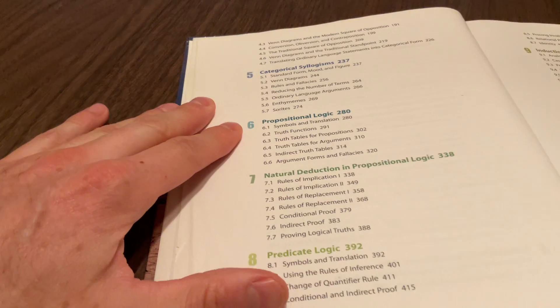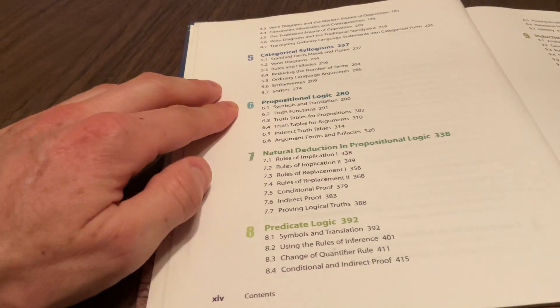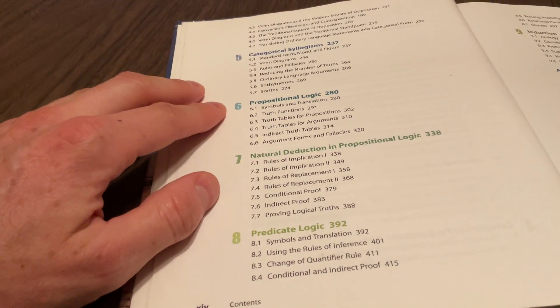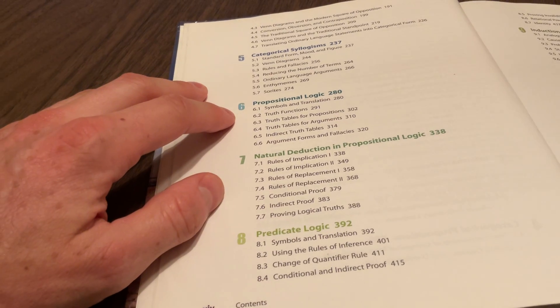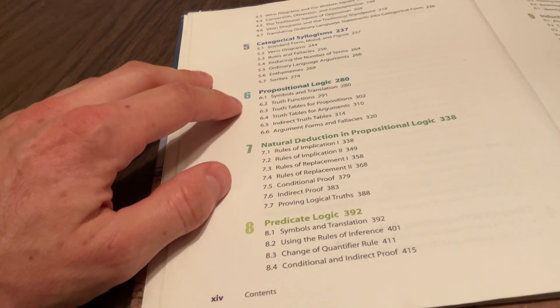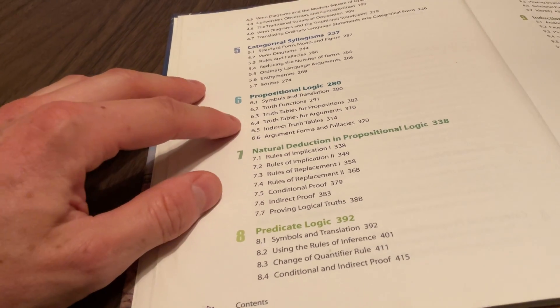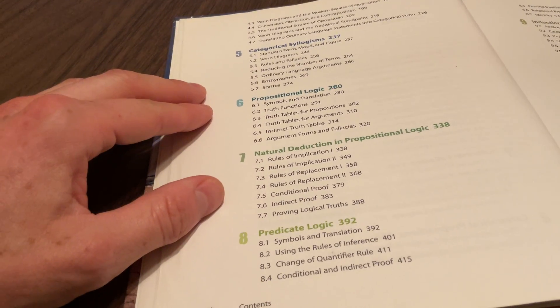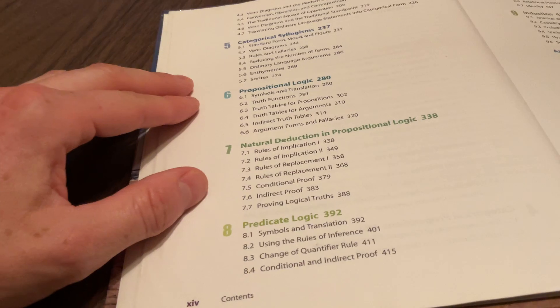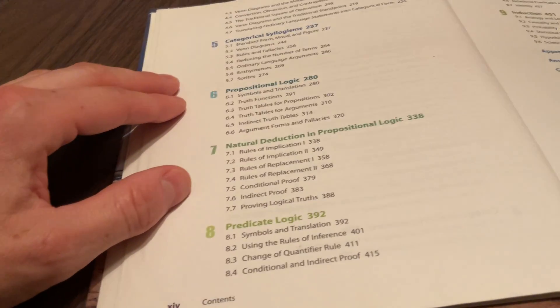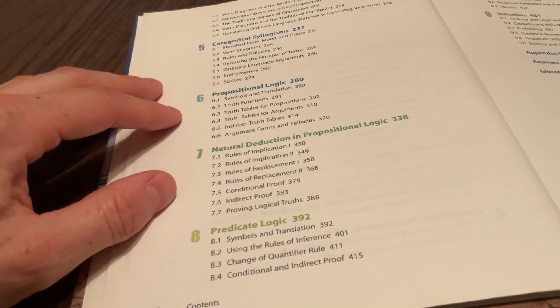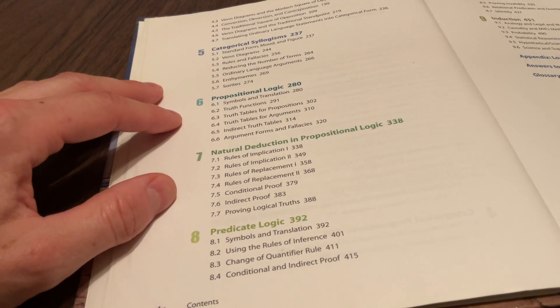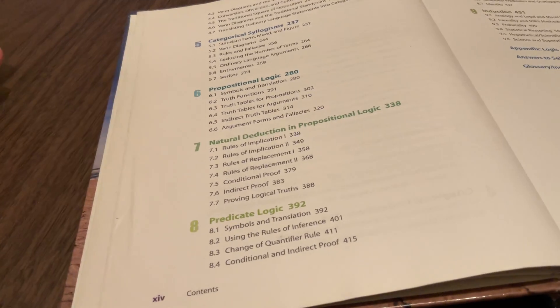Then you move into symbolic logic, like propositional logic. That's a truth-functional logic. You have truth tables, that sort of thing. I kind of have a dislike of truth tables, but perhaps they're pedagogically useful. They're kind of tedious, but that's a standard topic that's covered. This is a pretty standard textbook.